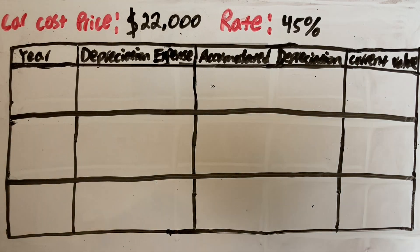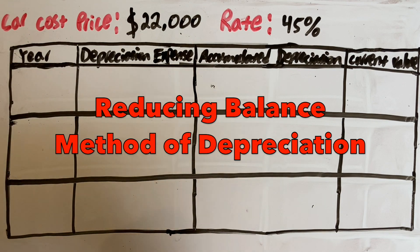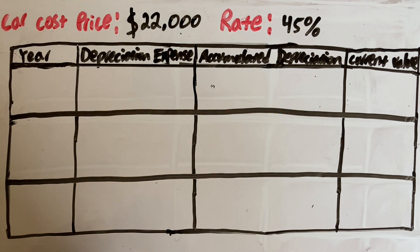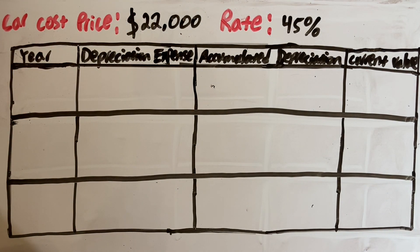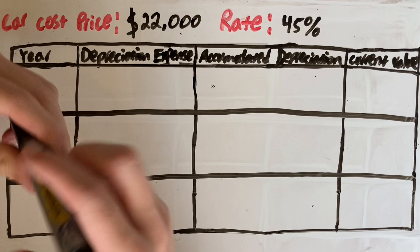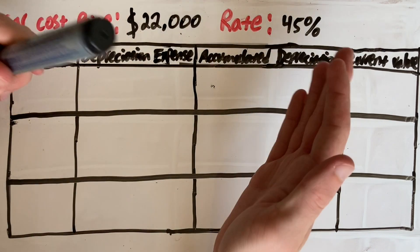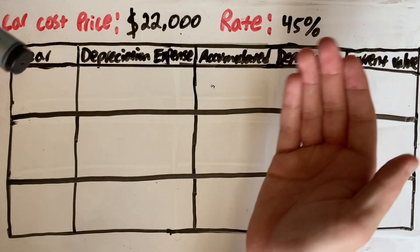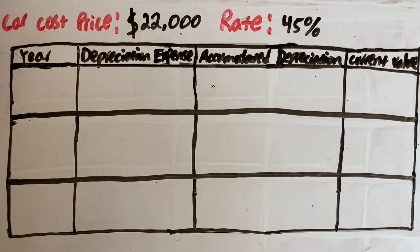Hello and welcome. In this video I'm going to show you how to use the reducing balance method of depreciation. The reducing balance method is one of the main types of depreciation and we use it when we want to depreciate an asset that loses more money in its early years than in its later years. That's the key difference between the reducing balance method and other methods of depreciation.